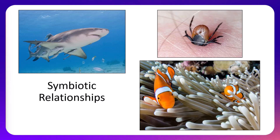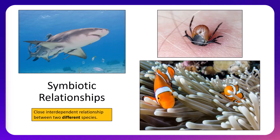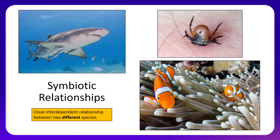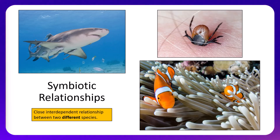Symbiosis is a shortened version of the term symbiotic relationship, which we would define as a close interdependent relationship between two different species. Interdependent meaning that they are going to be relying on each other in some capacity, and different species meaning it has to be two different kinds of species. It cannot just be like two grizzly bears teaming up to hunt something — that wouldn't be a symbiotic relationship.